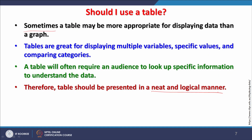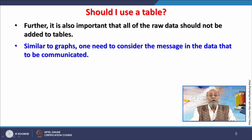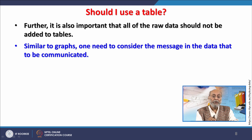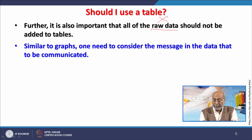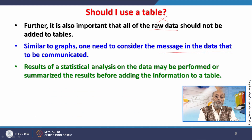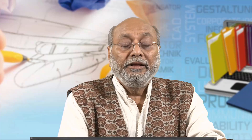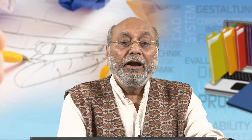It is important that all raw data should not be added to a table — only the relevant data discussed in the body of the manuscript, paper, or thesis should be included. Do not bring unprocessed raw data into your table. Similarly, for graphs, consider the message you want to communicate. If statistical analysis has been performed, the summarized results can be presented in a table in the results section.